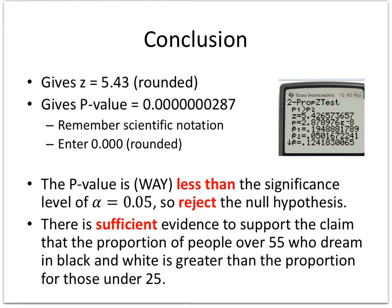Our conclusion: the p-value is less than the significance level, so we reject the null hypothesis. There is sufficient evidence to support the claim that the proportion of people over 55 who dream in black and white is greater than the proportion for those under 25.